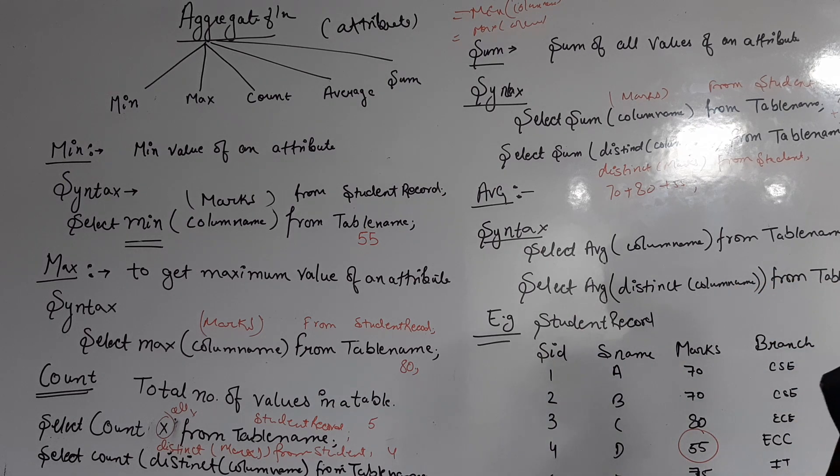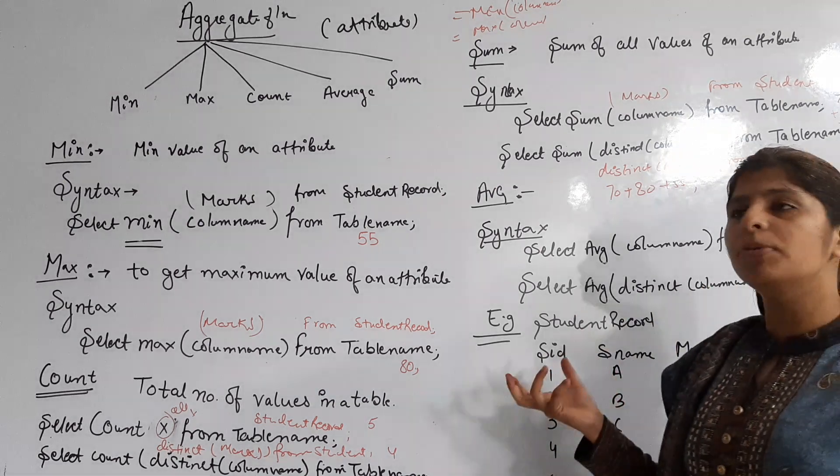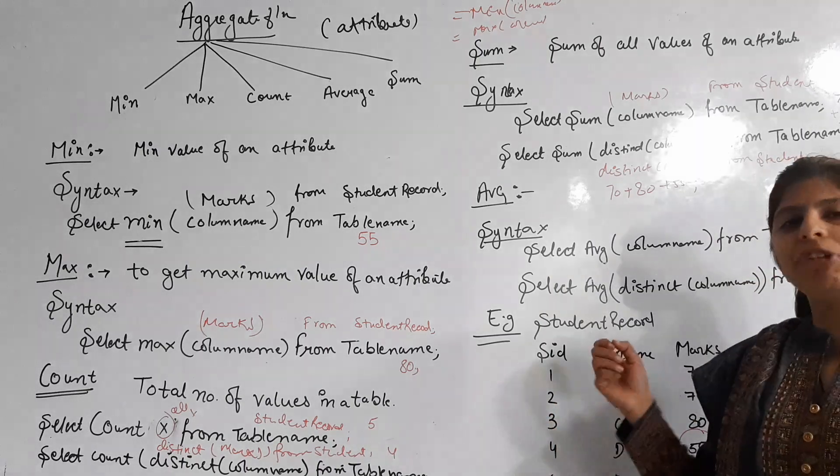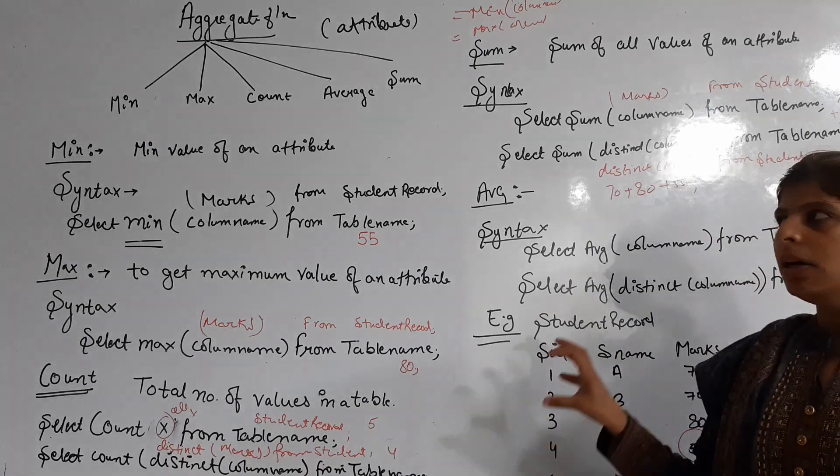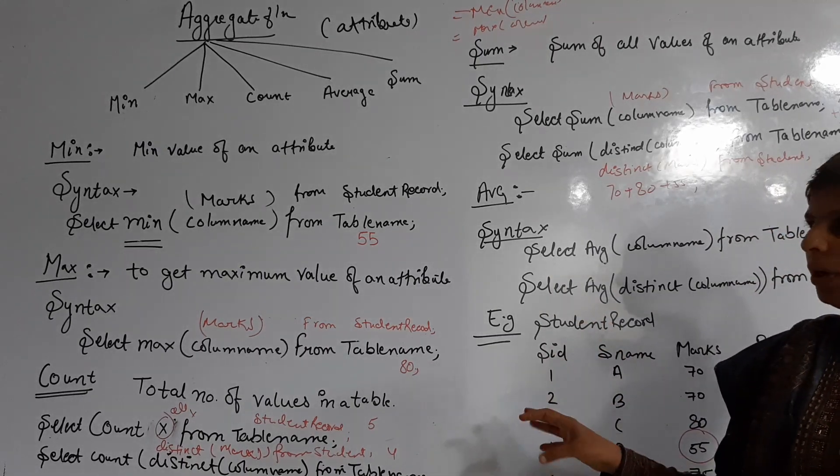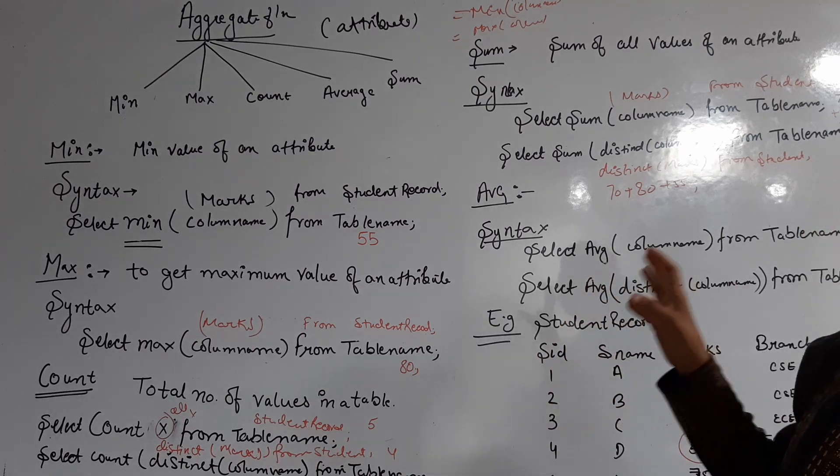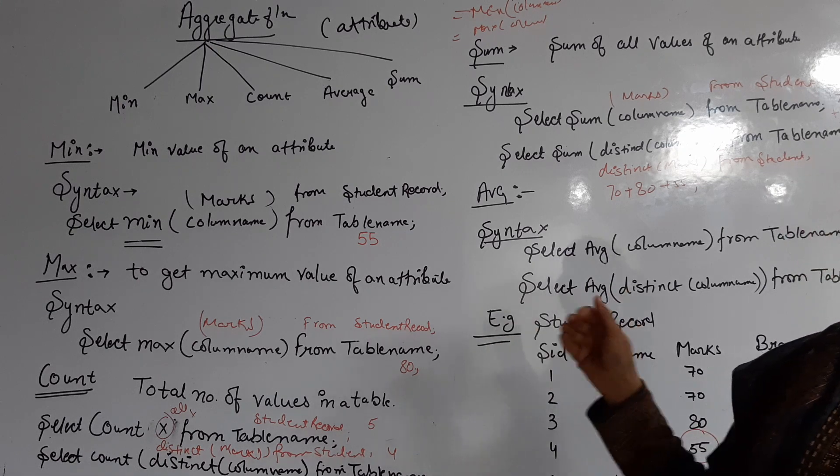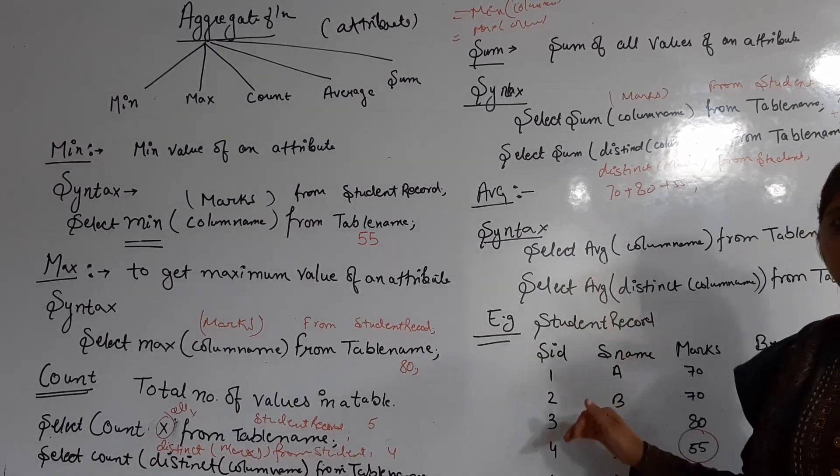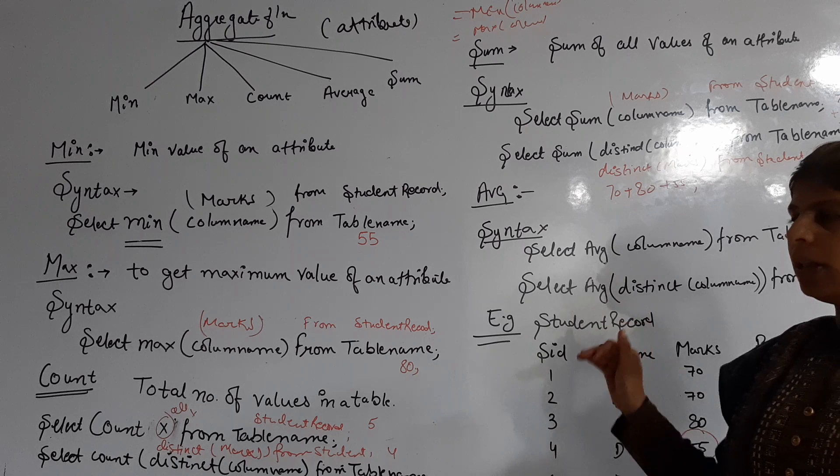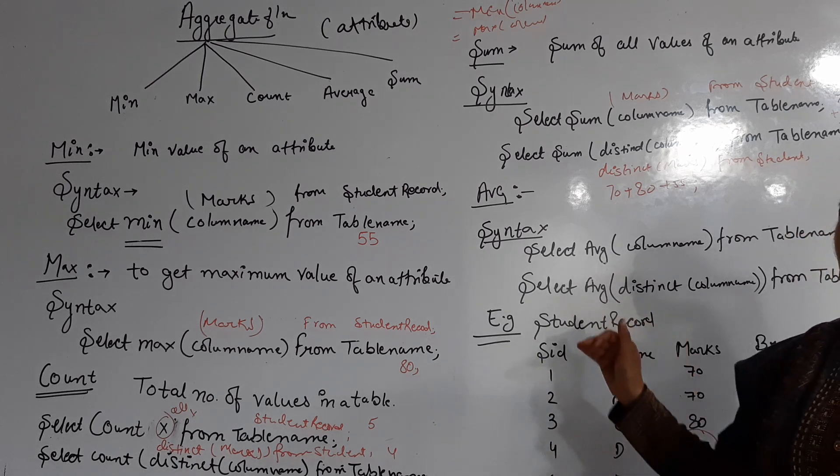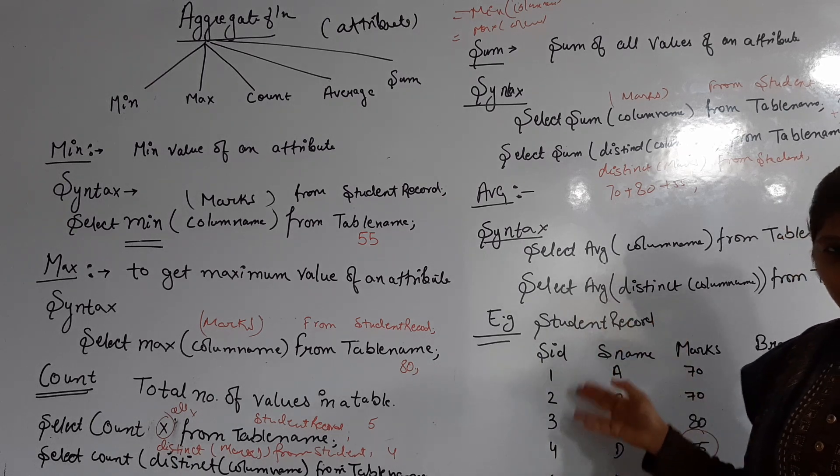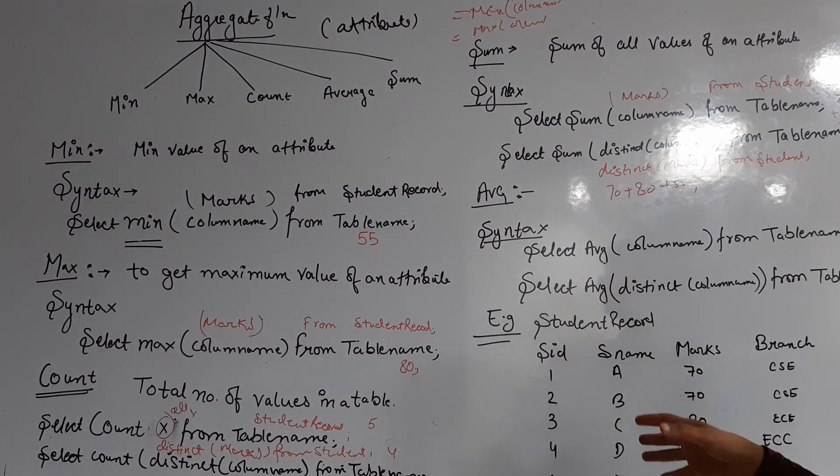I hope you understand this concept of aggregate functions. This is a very simple thing in SQL, but we all should know what is aggregate function, what are the different types of aggregate functions, and what is the syntax for writing the aggregate functions in SQL. Hope you like this video and understand the syntax of all these aggregate functions. Thank you.